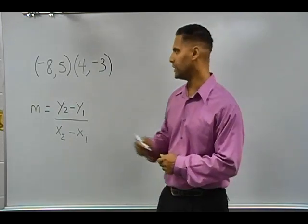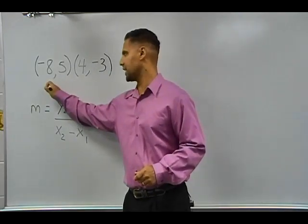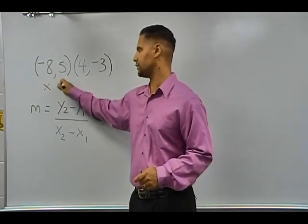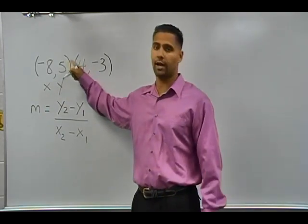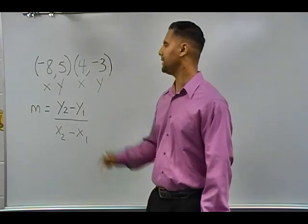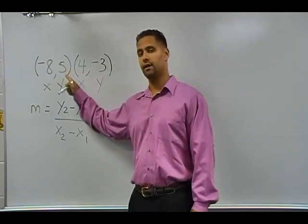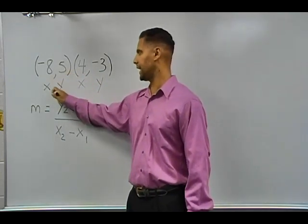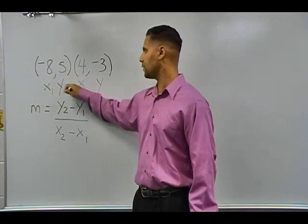Well, to keep it simple, we know that an ordered pair is just an x value followed by a y value. So underneath the first point, I am going to write an x and a y and do the same thing for the second point. Because this is the first point given, I am going to call the negative 8, x1 and the 5, y1.